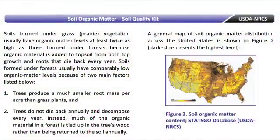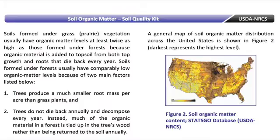Areas that are historically prairies or grasslands will have higher levels of organic matter, as shown in figure two. The Midwest has higher organic matter naturally. Areas that are forested will have a smaller root mass per acre and will not die back annually, so forested areas tend to have lower organic matter than grasslands.